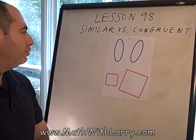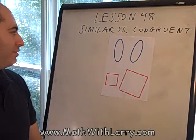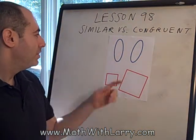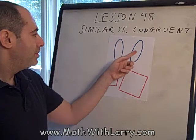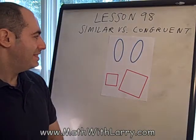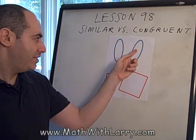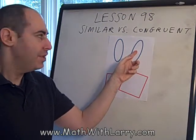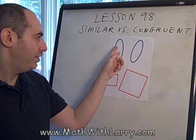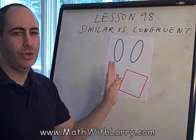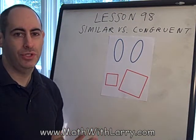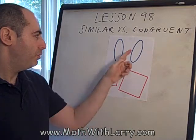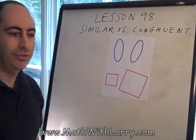Here I have a blue oval. The mathematical term for that is actually an ellipse — you'll hear that later. So here I have a blue ellipse, and to the right of it I have one that's exactly the same size and exactly the same shape. Now this one is a little bit rotated compared to this, but that's okay. We don't care about rotation. It's still the same size and the same shape. So we say that these two figures are congruent.